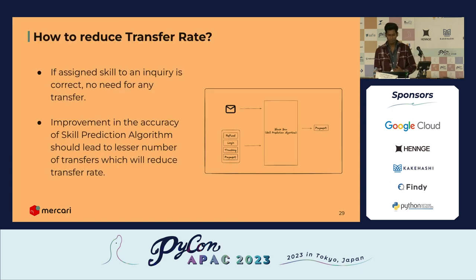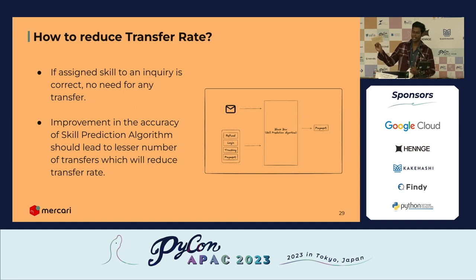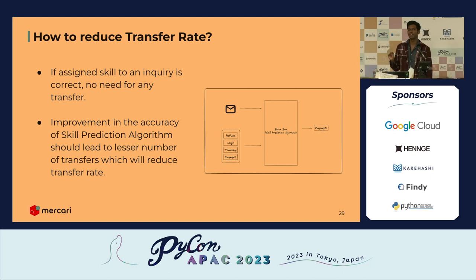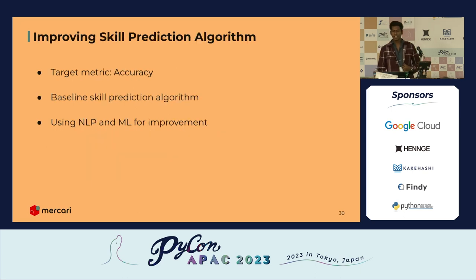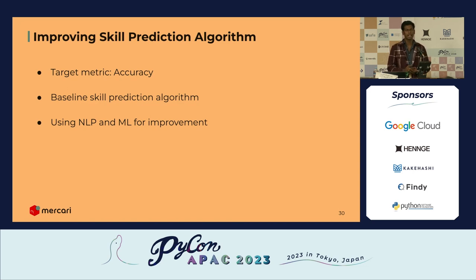To reduce the transfer rate, we need the skill assignment to be more accurate. If the black box algorithm assigns the correct skill, the agent doesn't need to make a transfer. So our business problem — reducing transfer rate — translates to a machine learning problem: improving the accuracy of our skill prediction algorithm. Our target metric is accuracy, and we'll need a baseline algorithm to improve upon using NLP and machine learning.